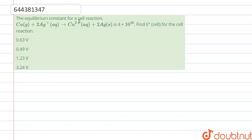The equilibrium constant for the cell reaction, that is Cu when react with 2Ag+, it forms Cu2+ and 2Ag, is 4 into 10 to the power 16. Find the E naught cell for the cell reaction.